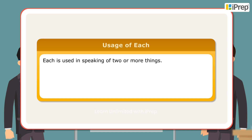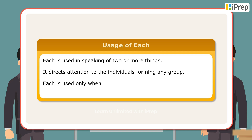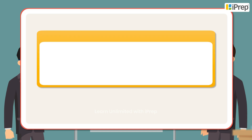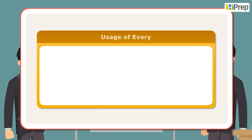Usage of 'each': Each is used in speaking of two or more things. It directs attention to the individuals forming any group. Each is used only when the number in the group is limited and definite.